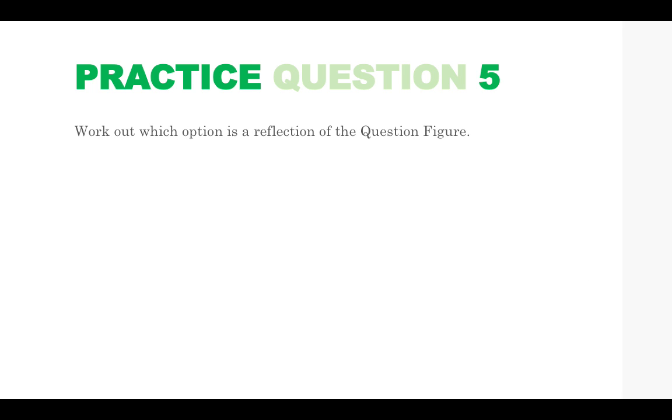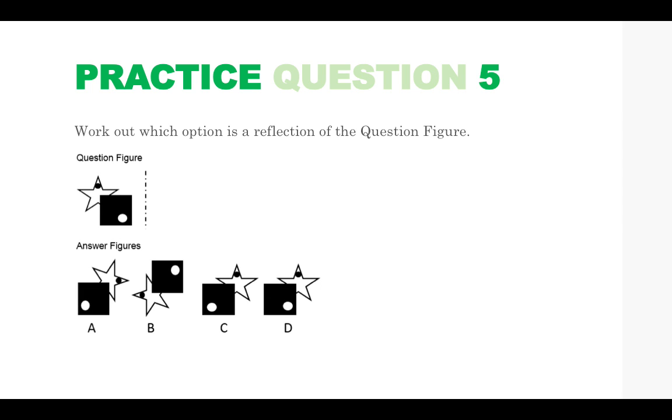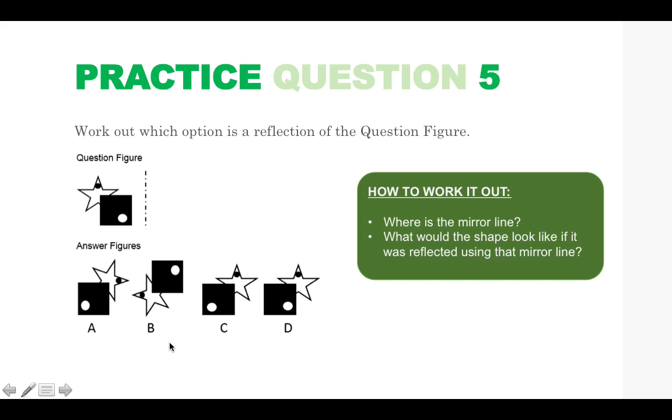Practice question 5. Work out which option is a reflection of the question figure. So we have to be very careful to see where the mirrored reflection is going to be. Now as you can see this line here is our vertical mirrored reflection. So if we place a mirror along this line you would be reflecting this shape right here. So here are your answer options.